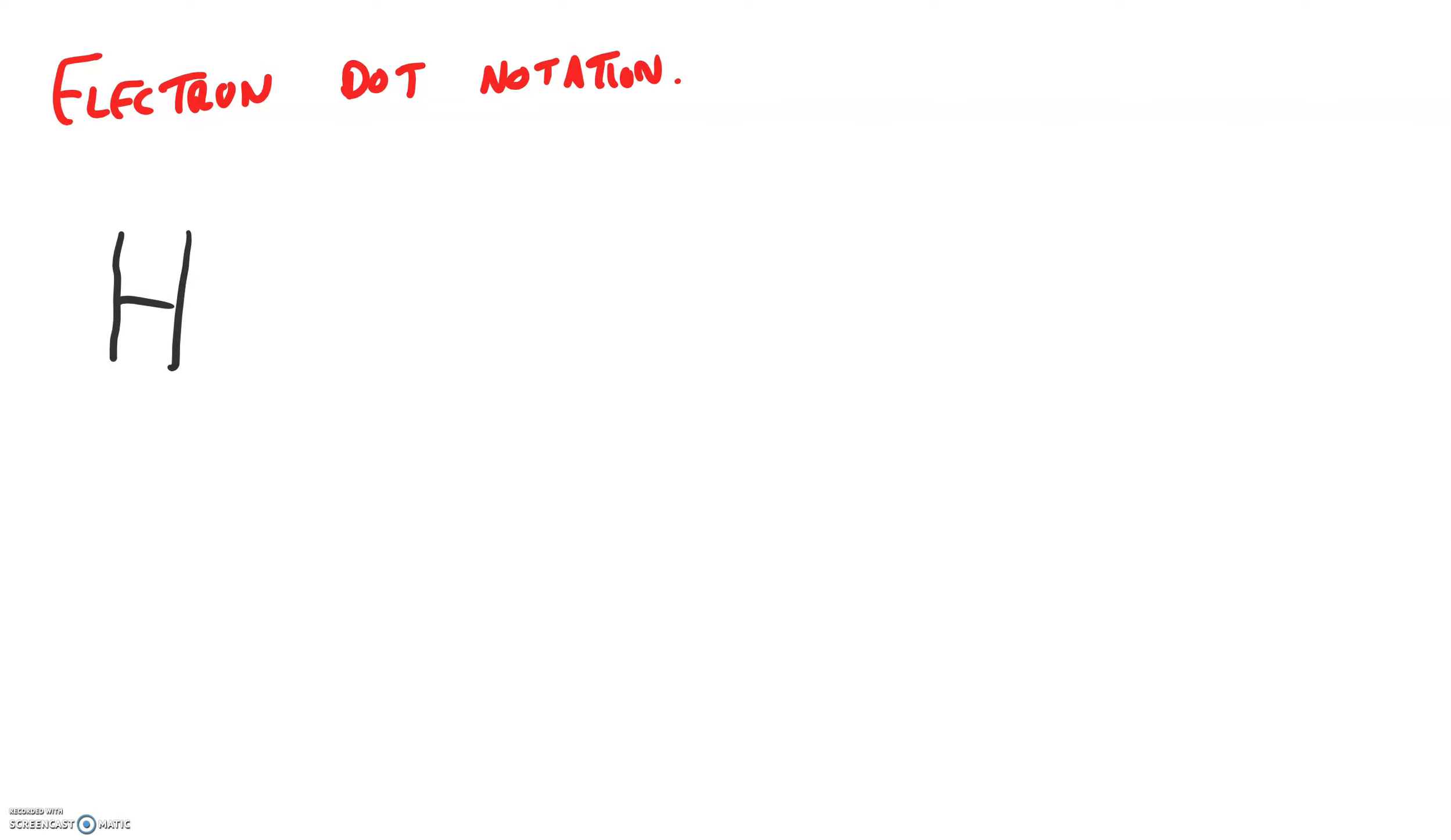To show the number of valence electrons an atom has, all we're going to do is write the symbol—for example, hydrogen—and we'll indicate how many valence electrons it has with a single dot.